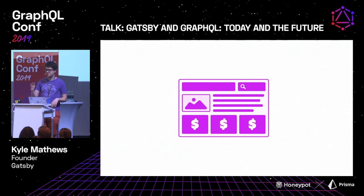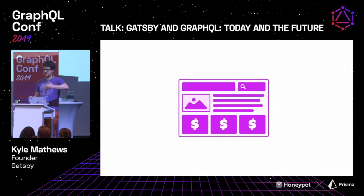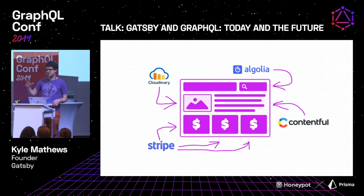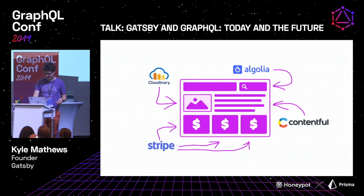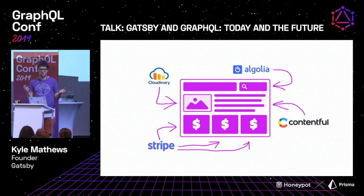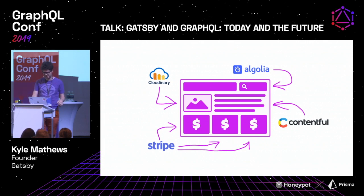A website ten years ago would have all functionality and data coming from a single CMS. But today it's very common to build a website where data and functionality comes from five or ten different services. In a similar way to monoliths vs. microservices, it gets confusing — what is your website if it's pulled together from all these different services? This is where Gatsby comes in and works really nicely, unifying that.